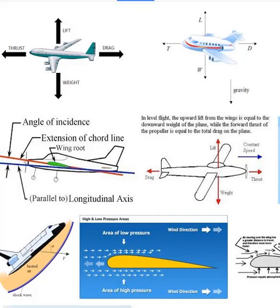Whenever a plane is in flight, there are four forces acting on it: gravity, lift, drag, and thrust. Gravity, of course, is natural, pulling the plane toward the ground. Lift is what is caused when air goes past the wing. It opposes gravity.